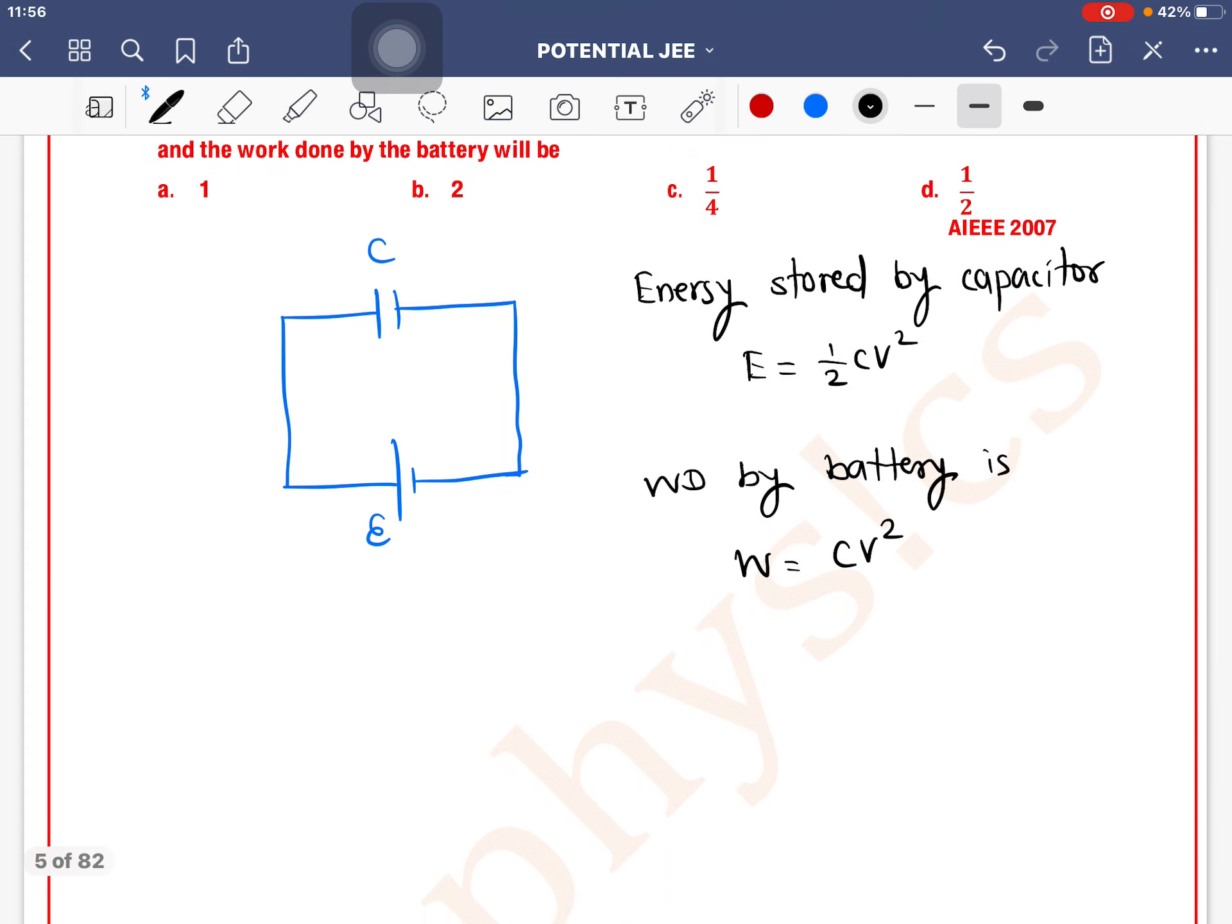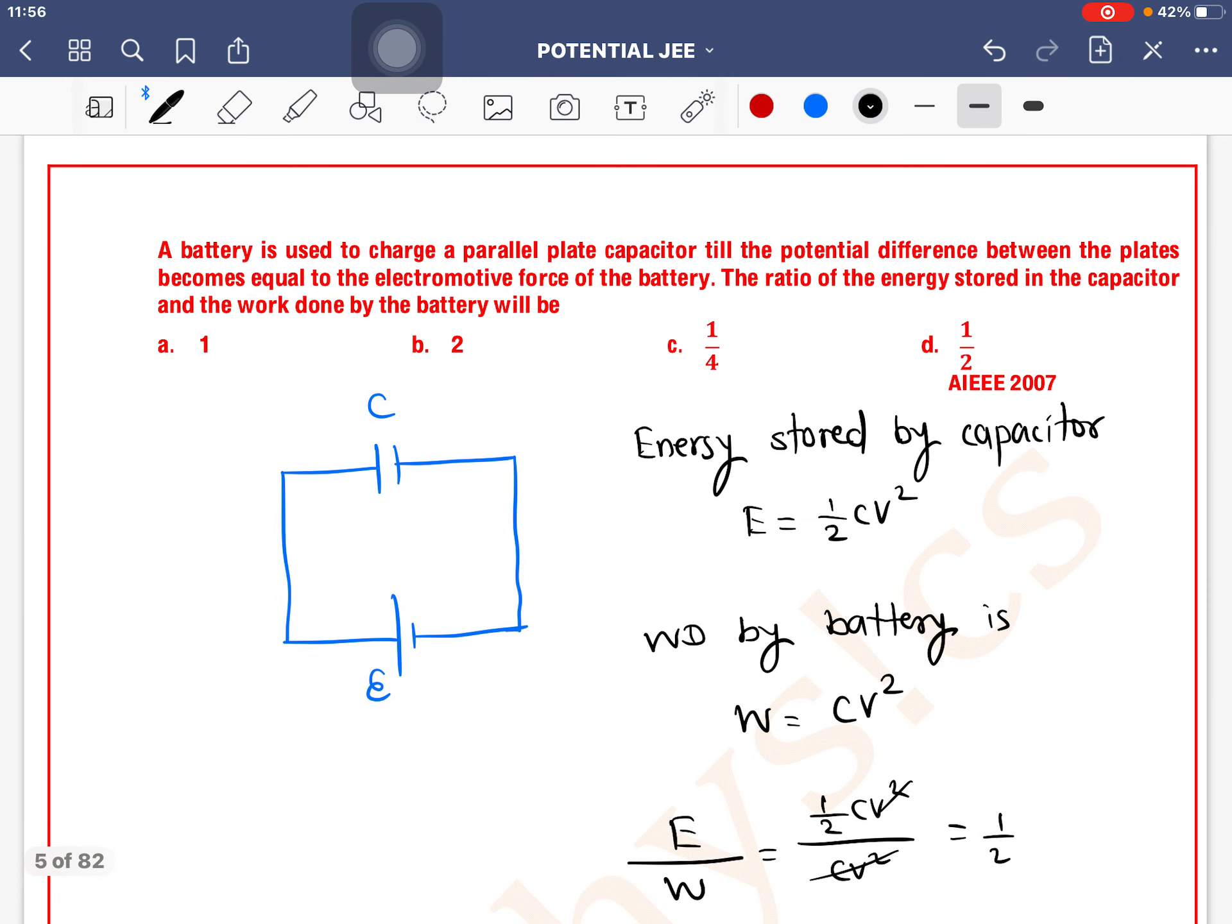They asked for the ratio of energy stored by capacitor to the work done by battery, which is half CV squared divided by CV squared. CV squared cancels out, leaving us with one by two. So option D is the correct one.